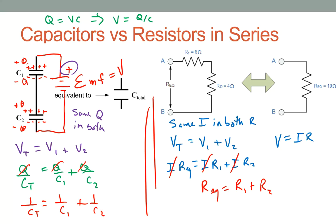Capacitors in series add with the same equation that resistors in parallel use. If I have two resistors in series, that makes a bigger equivalent resistance. But if I have two capacitors in series, that makes a smaller equivalent capacitance. So they work in reverse that way.